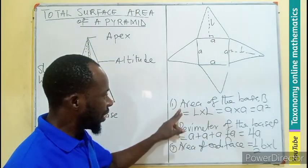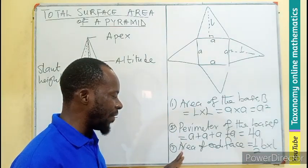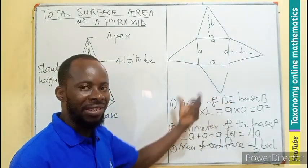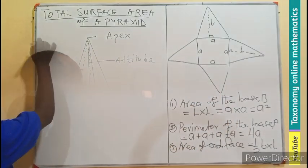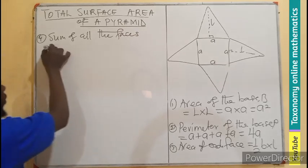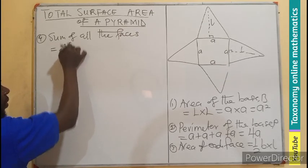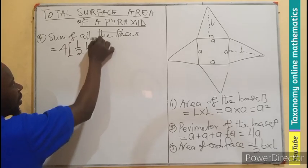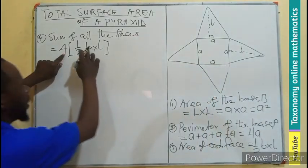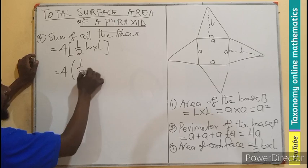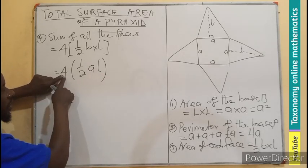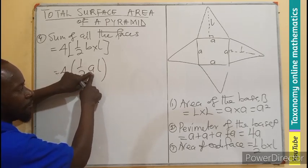We know the area of the base, the perimeter, and the area of each face. Since there are four faces, we find the sum of all four: 4 × (½ × a × L) = 4 × ½aL. Since we are looking for a formula and multiplication is commutative, we can rearrange this as (1/2) × (4aL).